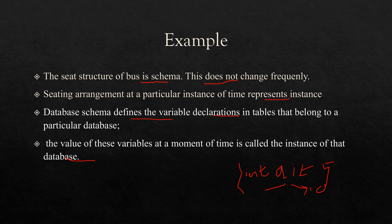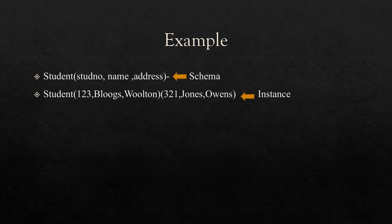So you can understand the difference between instance and schema in the database. Consider the table students that contains student number, name, and address — this is the schema of the table student, just a description of the table. Then this is the instance of the table that contains two records of the students. So the number of instances of the student table is currently 2.